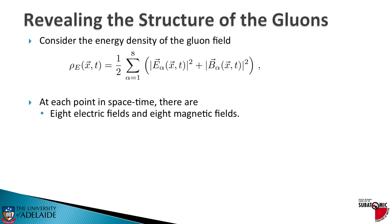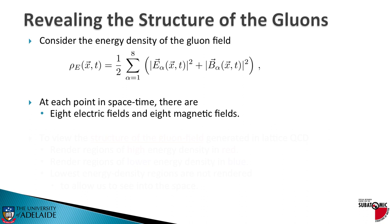And in order to view the structure, what I'm going to do is render regions where that energy density is high in red. Regions where the energy density is dropping down, we'll render in blue. And the lowest energy density regions, I'm not going to render them at all, and that way we can see into the volume of space and have a look at what these things look like.